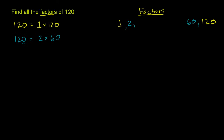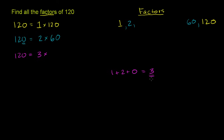Now let's think about whether 120 is equal to 3 times something. We could use the divisibility rule: you add up its digits, and if the sum is divisible by 3, we're in business. So for 120, we compute 1 plus 2 plus 0, which equals 3. And 3 is definitely divisible by 3, so 120 is going to be divisible by 3.